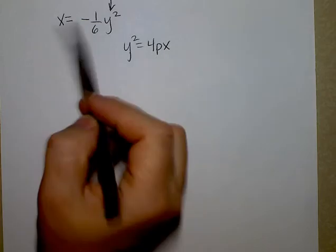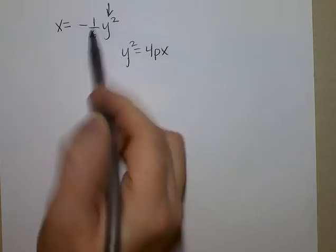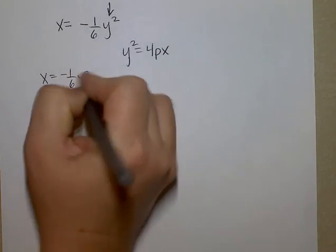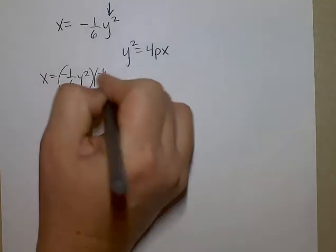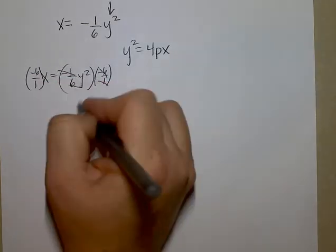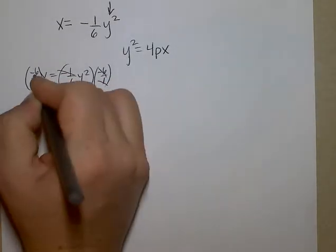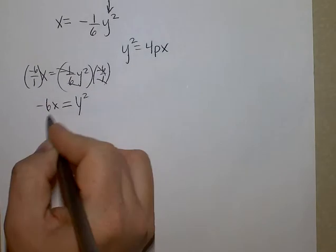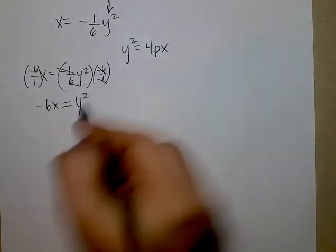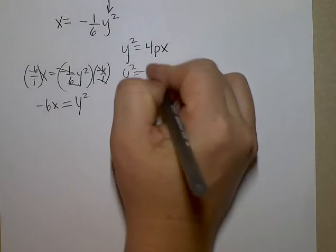So to get rid of this fraction, which is negative 1 sixth, I'm going to multiply by the reciprocal. So I'm going to multiply both sides by negative 6 over 1. Now this cancels, and I have y squared equals negative 6x.